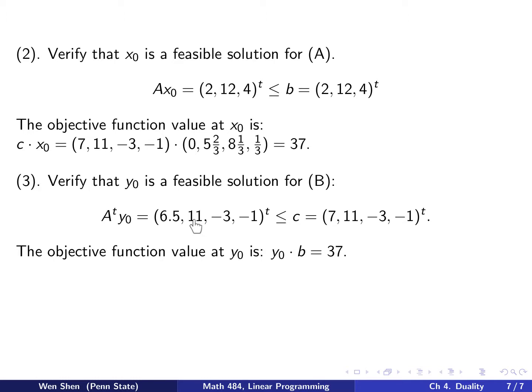We can also compute the objective function value at y₀, which is y₀ dot the b vector, and it's 37.